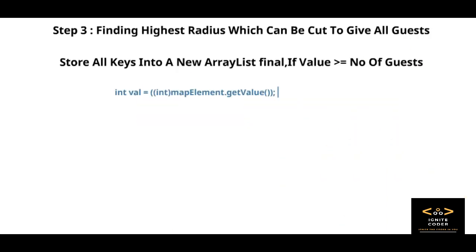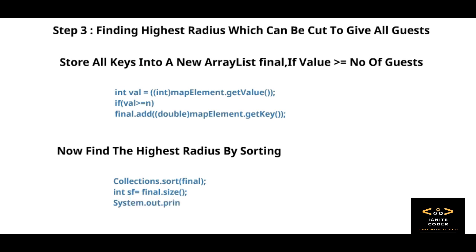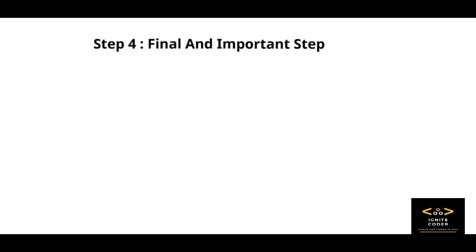Now what we need is find the highest value that satisfies the condition. For that, we store values which met the condition into a new ArrayList. After that, we need to find the highest radius by sorting. Then we simply sort and find the last element of the ArrayList. Now the final and most important step, let's print the value of highest radius we got.